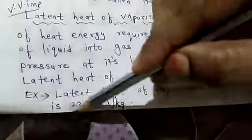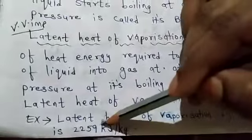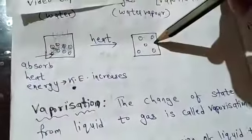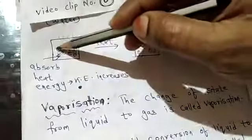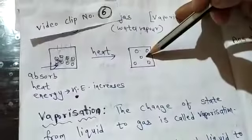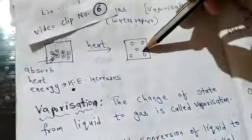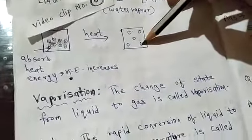This heat energy is used to overcome the interparticle force of attraction in liquid and to convert it into gas. So for water, to change it completely into water vapor or steam, 2259 kJ per kg is needed.